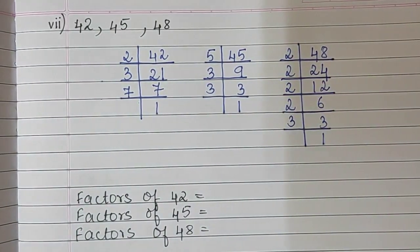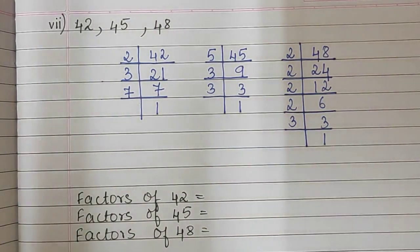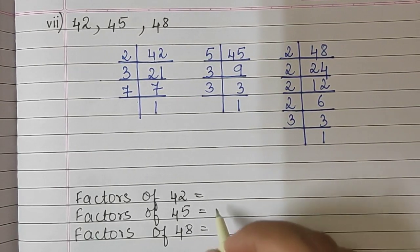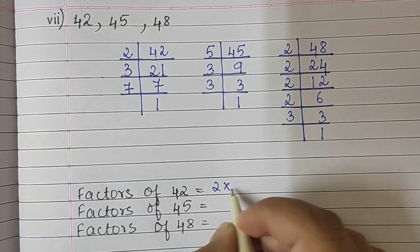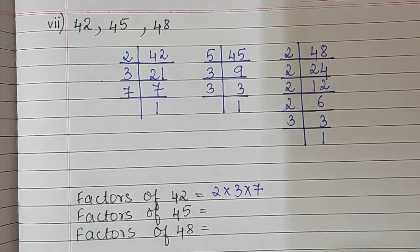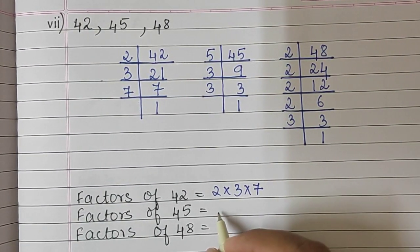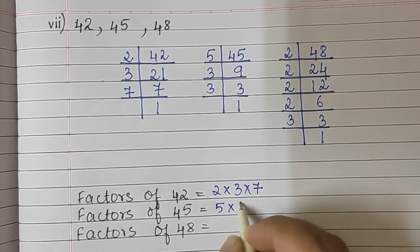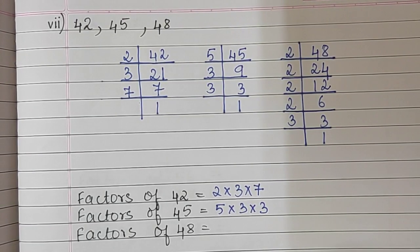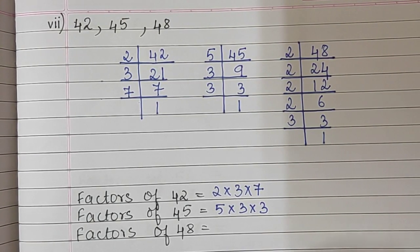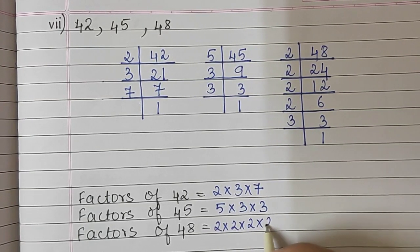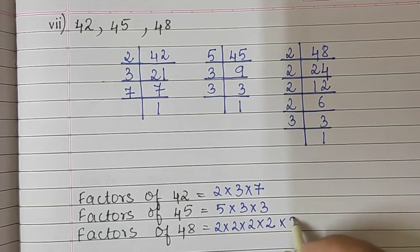So now we will write the factors of the numbers. Factors of 42: 2 into 3 into 7. Factors of 45: 5 into 3 into 3. Factors of 48: 2 into 2 into 2 into 2 into 3.